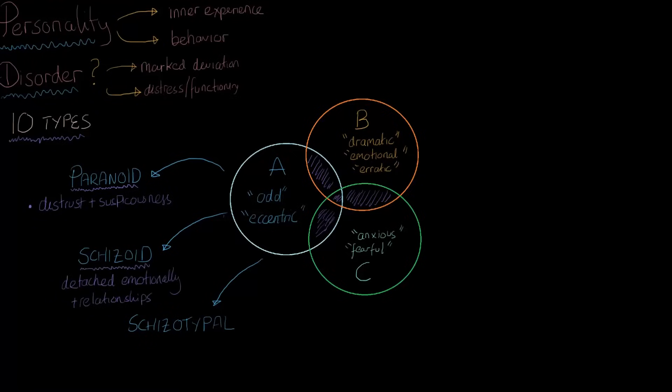And finally, we get to schizotypal. People with schizotypal personality disorder not only tend to avoid close relationships, but they also have this kind of odd or magical thinking that would really differentiate them from the other cluster A personality disorders.